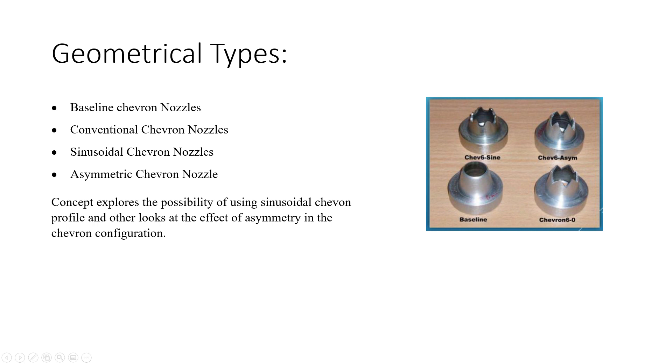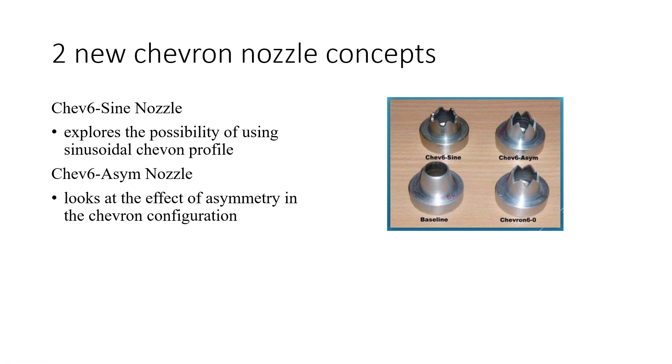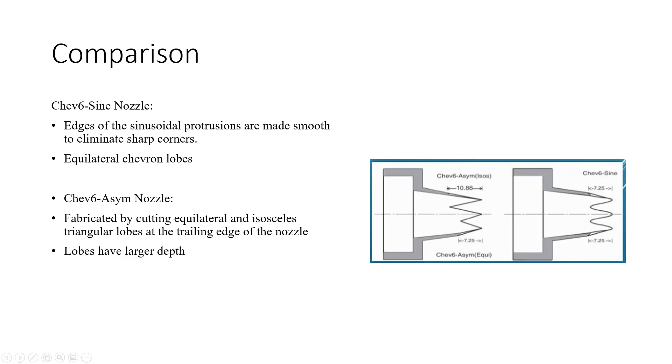The most popular geometrical types of chevron nozzles are baseline, conventional, sinusoidal, and asymmetric chevron nozzles. The two new chevron nozzle concepts brought here are sinusoidal and asymmetric. One concept explores the possibility of using sinusoidal chevron profile, whereas the other looks at the effect of asymmetry in the chevron configuration. Geometrically, for sinusoidal chevron nozzles, the edges of the sinusoidal protrusions are made smooth to eliminate sharp corners.